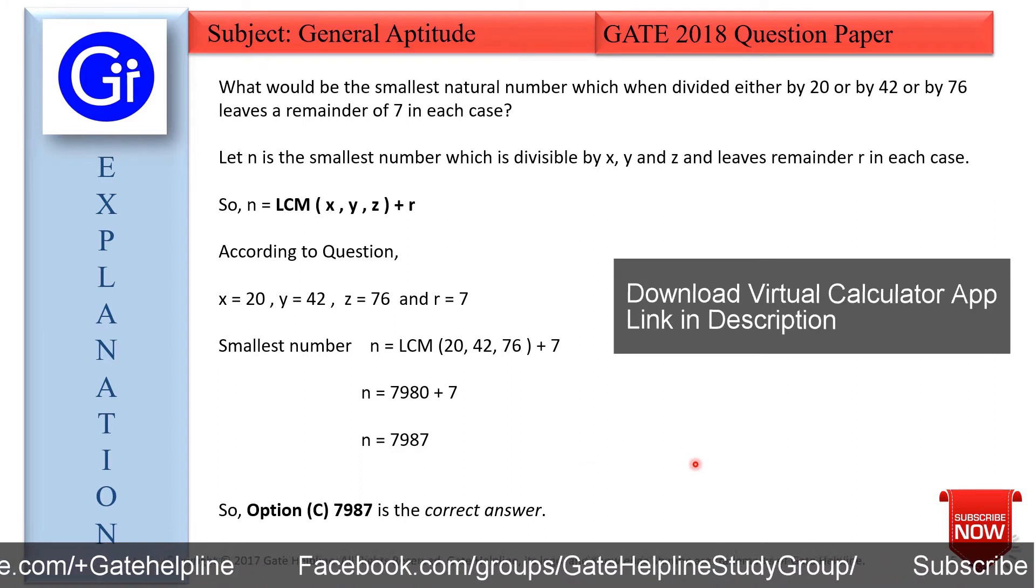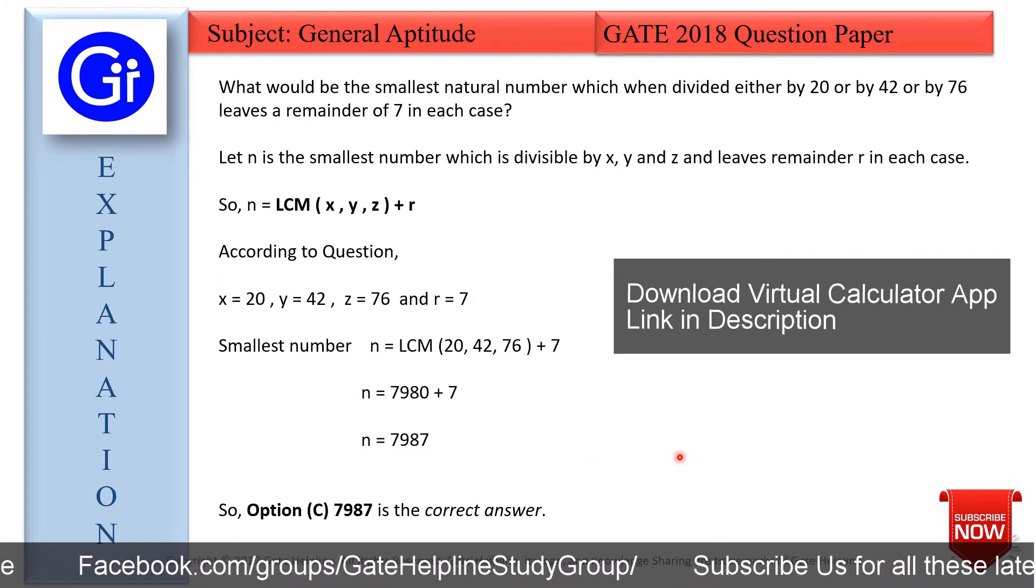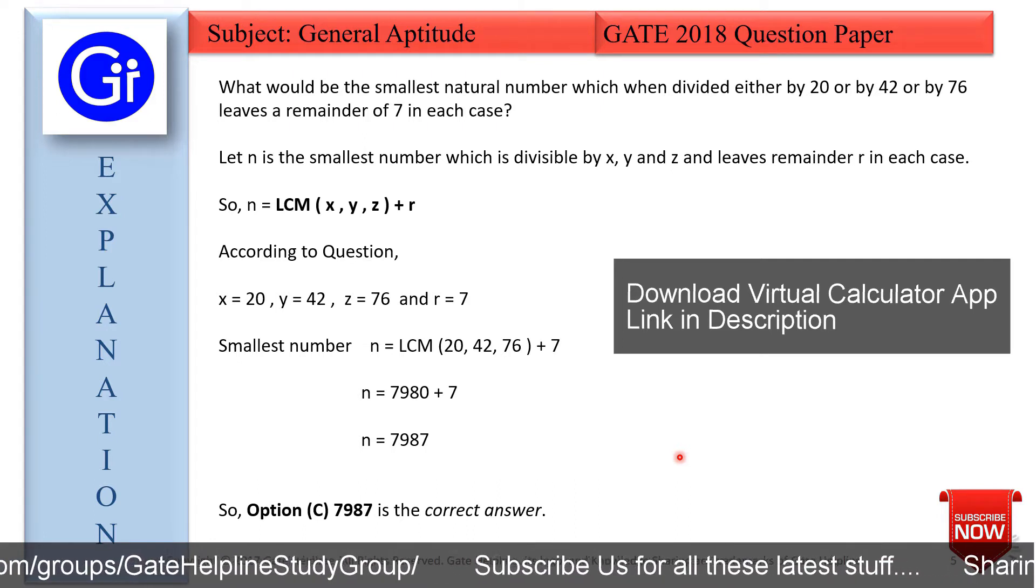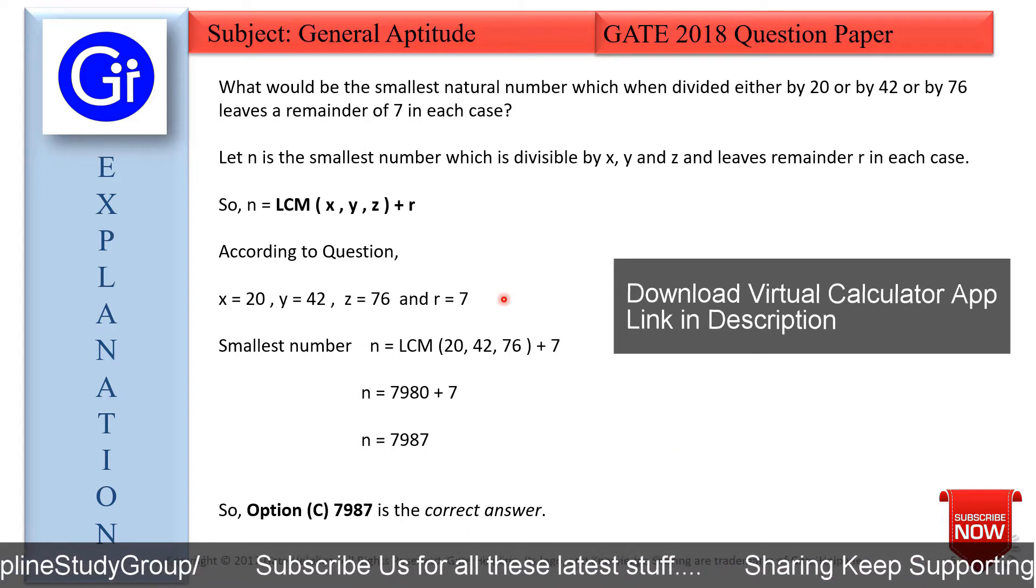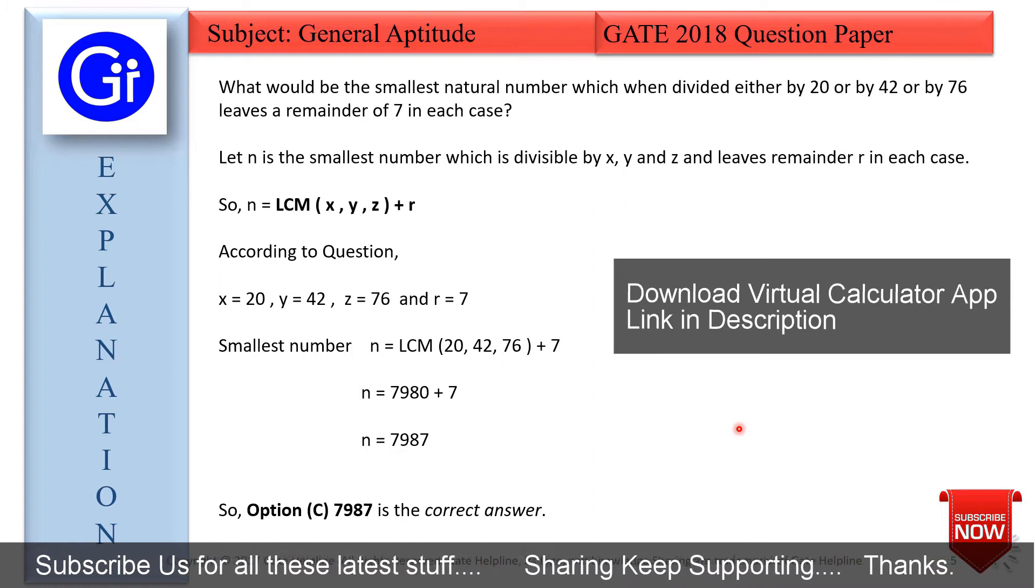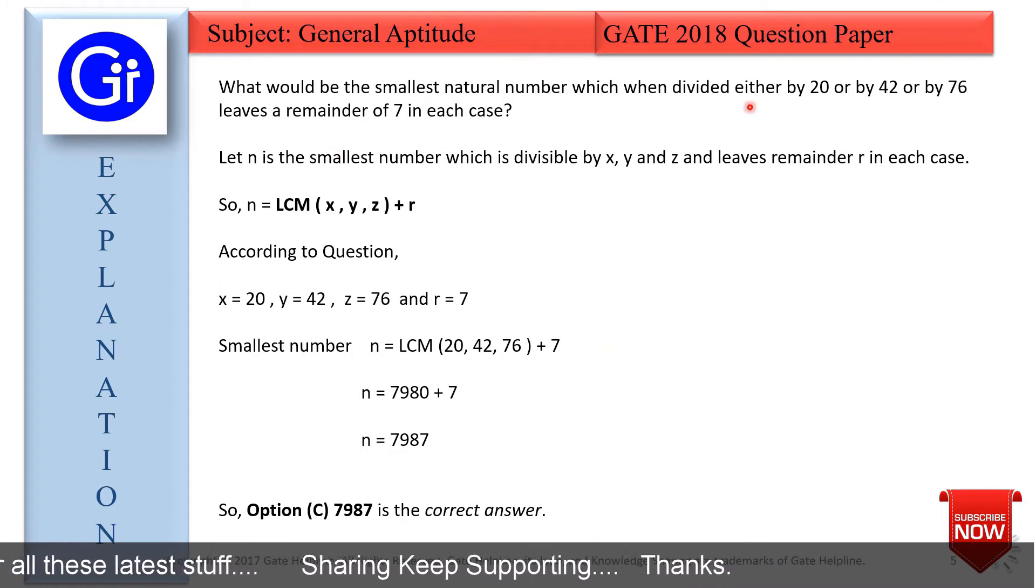With the help of the virtual calculator, you can simply divide the value of the options one by one and find which option is leaving a remainder of 7 after dividing by 20, 42 and 76. This is the simplest way.